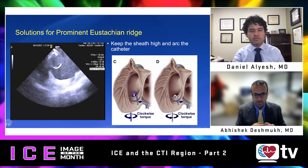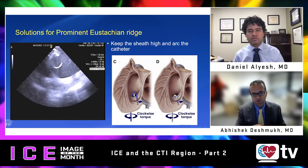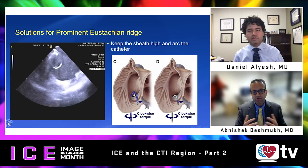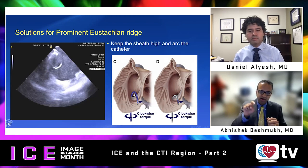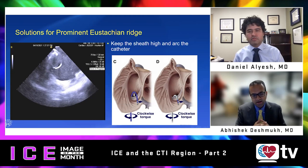If you're advancing a wire or any catheter from the IVC into the right atrium and you suddenly feel some obstruction, or the catheter or wire is not going straight up to the SVC, then you may want to think you are dealing with a prominent eustachian ridge. Another sign is if the CS catheter has to bend down more towards the ventricle and you have to do a very steep clock to get into the CS.